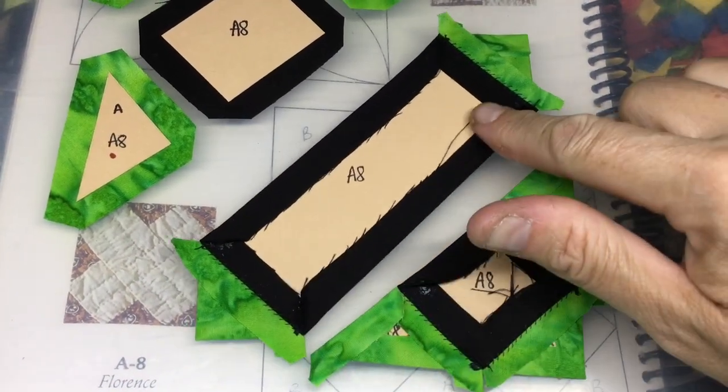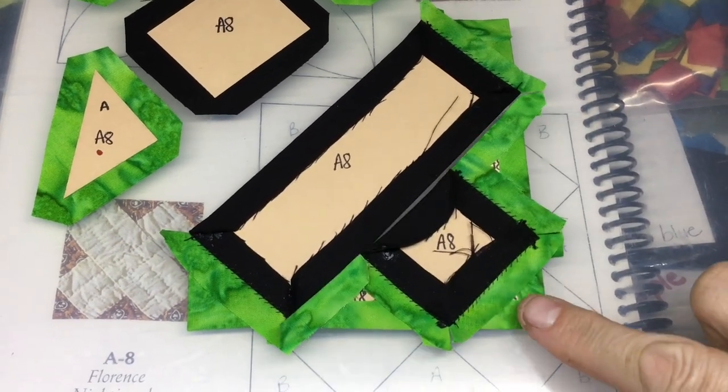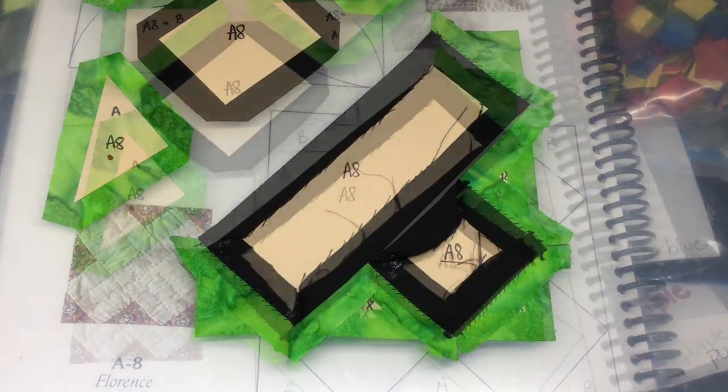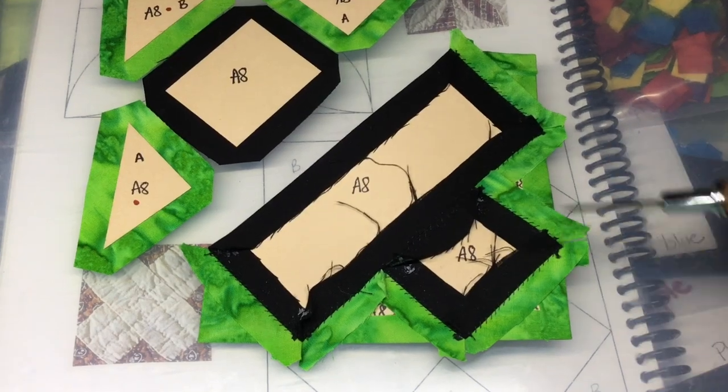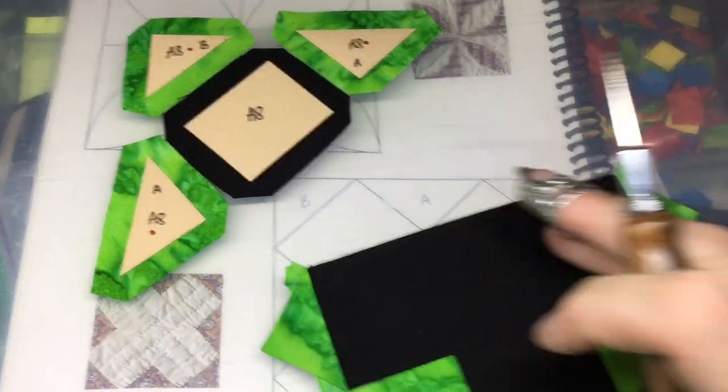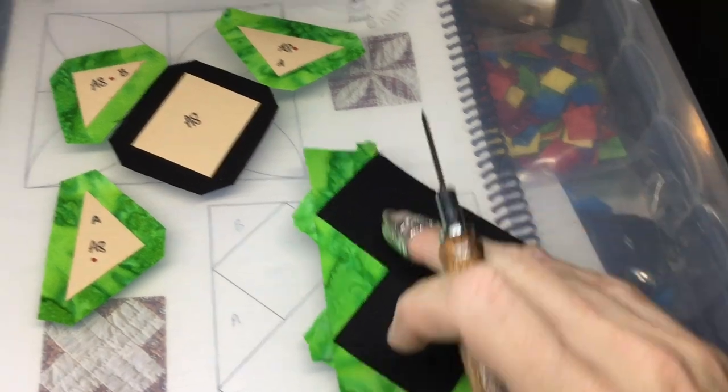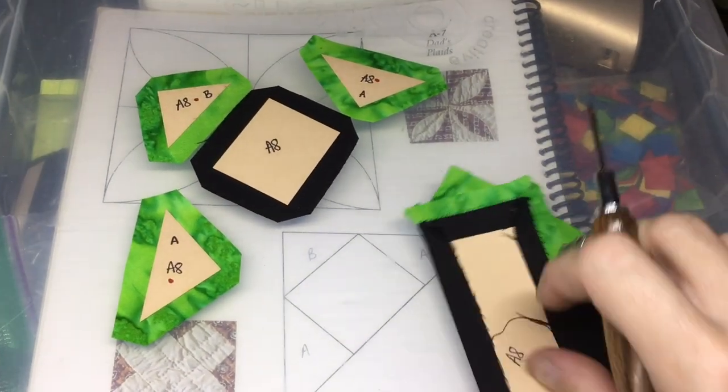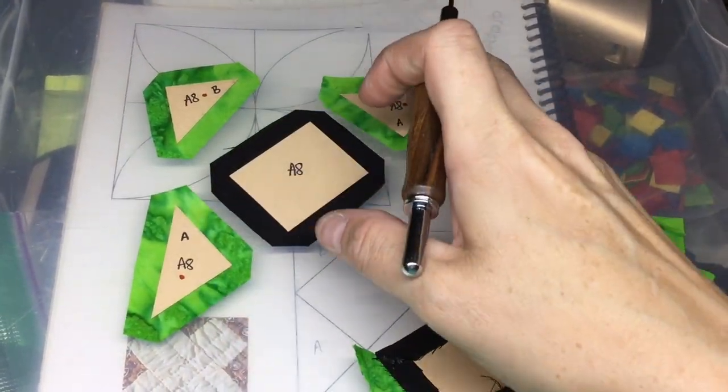So I've finished my center row, and now I'm going to attach the corner piece. So I've attached my two rows, and this is what I have on the front. So the next thing to do is to baste and connect this row.